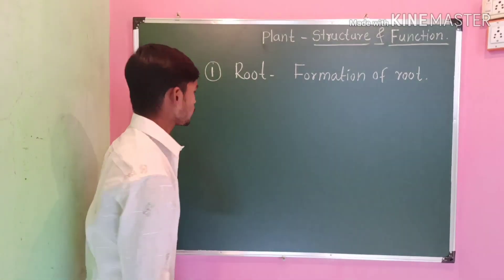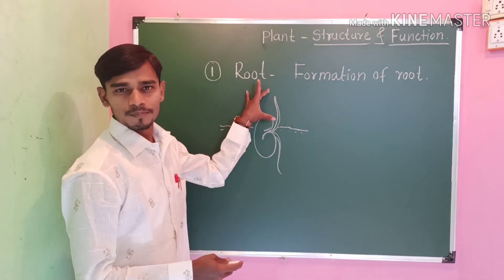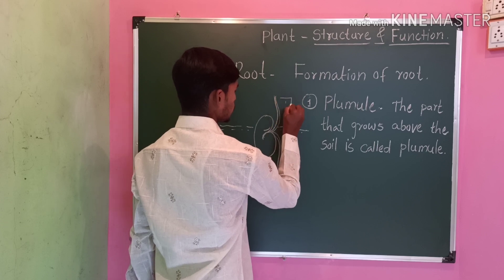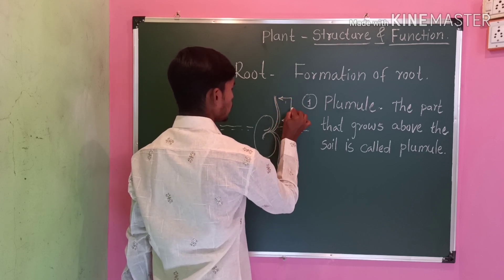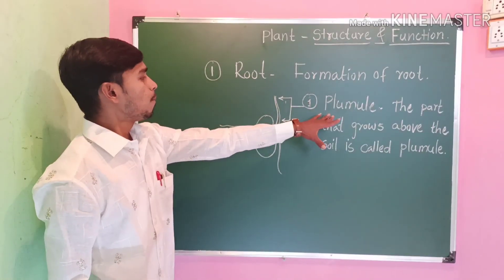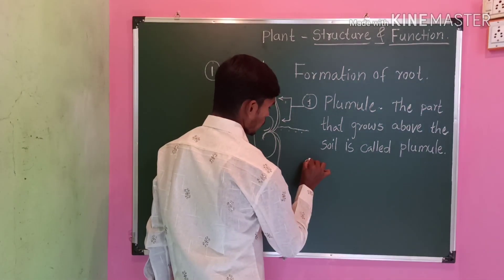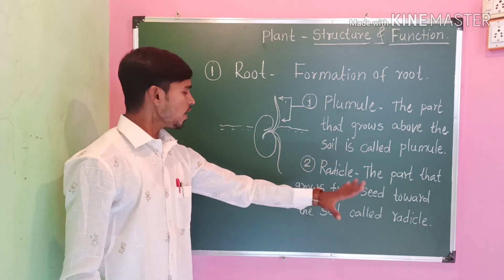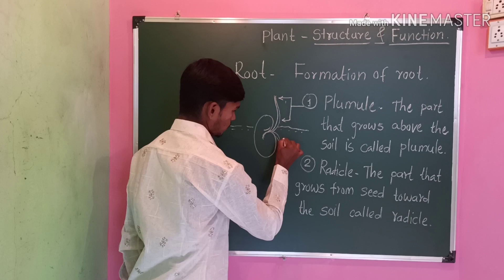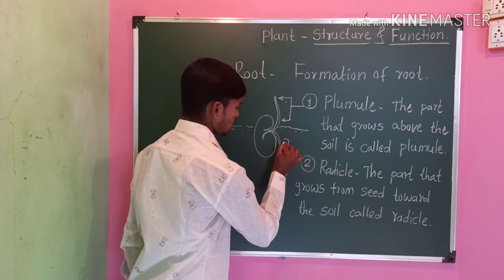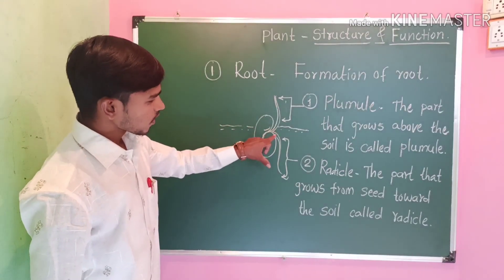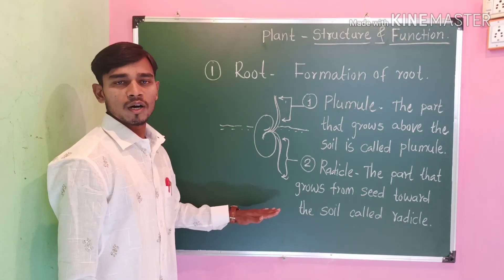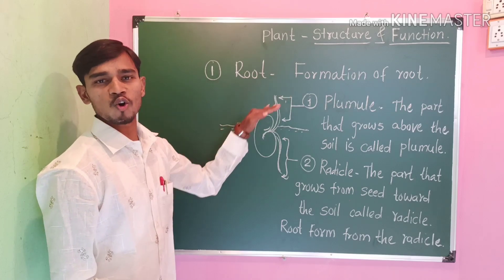Formation of root. The part that grows above the soil is called the Plumule. The part that grows from the seed toward the soil is called the Radicle. The root is formed from the Radicle. This is the formation of root.